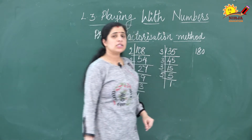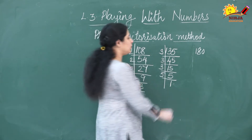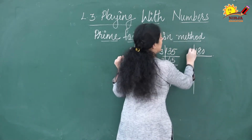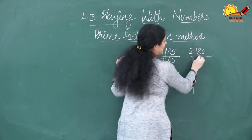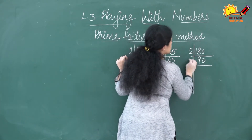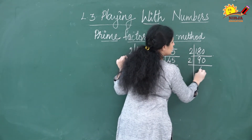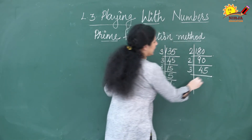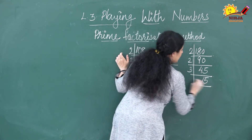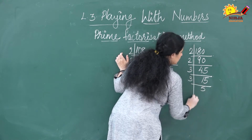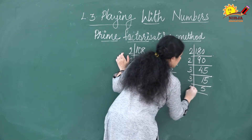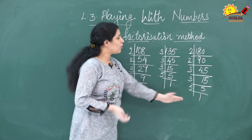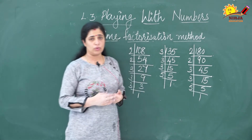Now the prime factorization of 180. Dividing by 2 gives 90, again by 2 gives 45, by 3 gives 15, again by 3 gives 5, and by 5 gives 1. So the prime factorization of all three numbers is complete.